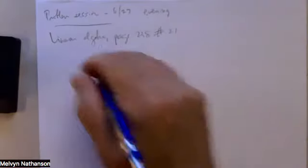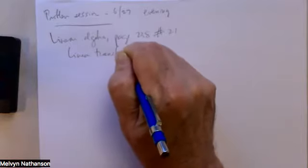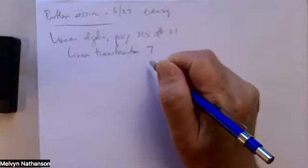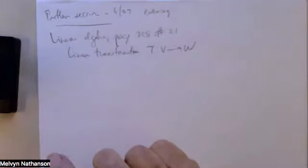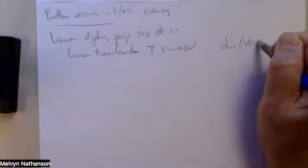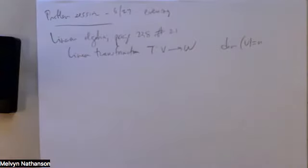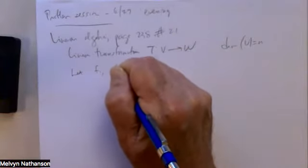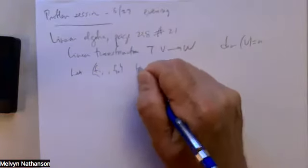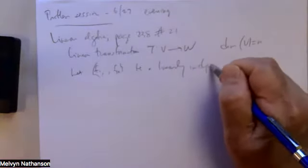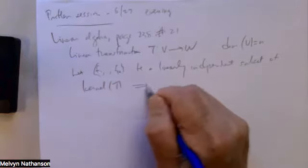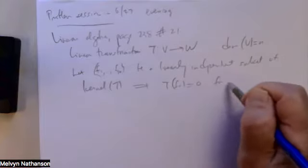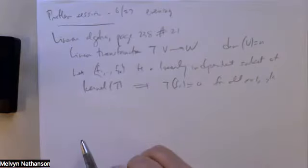Problem 21: we have a linear transformation T from a vector space V to a vector space W, and the dimension of V equals n. Let F1 up to F sub K be a linearly independent subset of the kernel of T. That means T of each of these vectors F sub i is zero for all i from one up to K, because it's in the kernel.